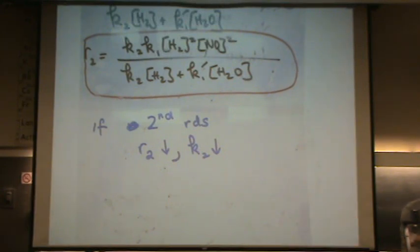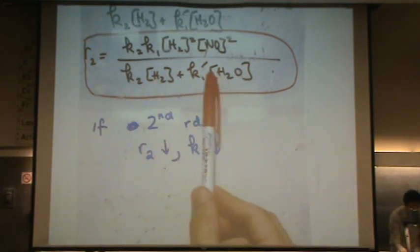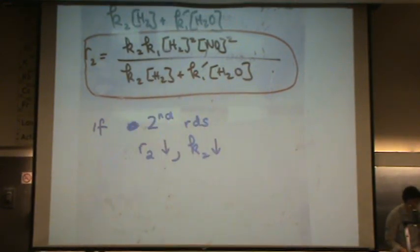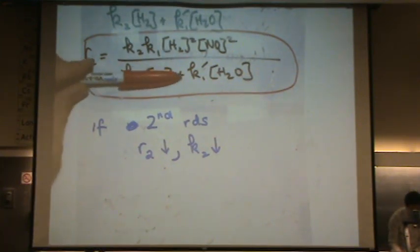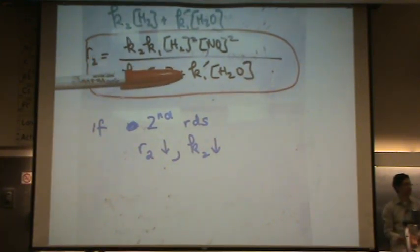If K2 is really tiny, what's going to happen here in this addition? That's basically nonexistent. Does that make sense? Compared to K1 prime.